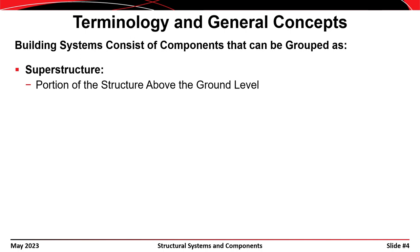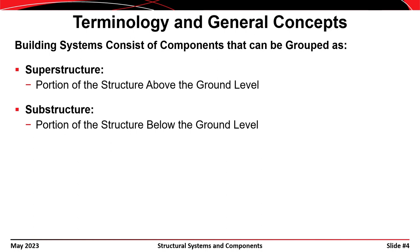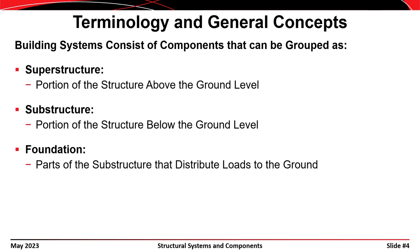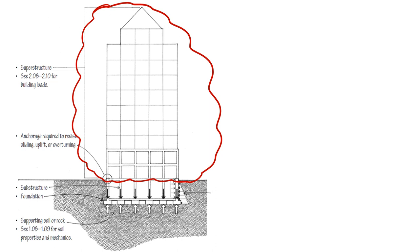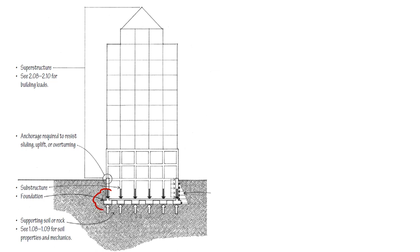Another way of grouping elements or components is to determine whether they're part of the superstructure — that's the part of the structure above the ground — or part of the substructure, which is below the ground. The foundation is also part of the substructure. In a mid-rise structure, anything above the ground is the superstructure, anything below the ground is the substructure, and the foundation elements support the structure. You might also consider basement walls to be part of the foundation since they do carry load.